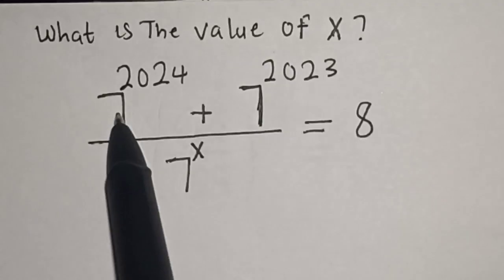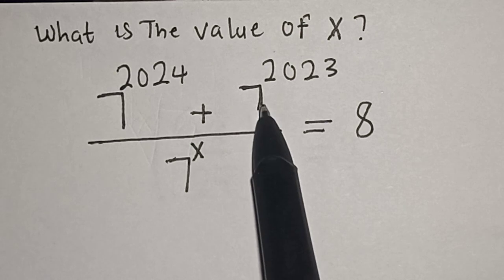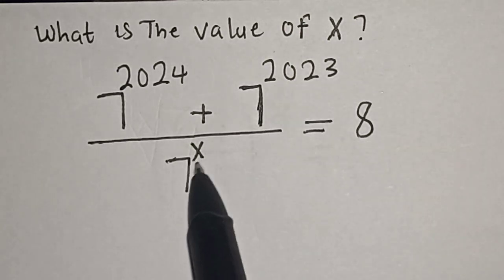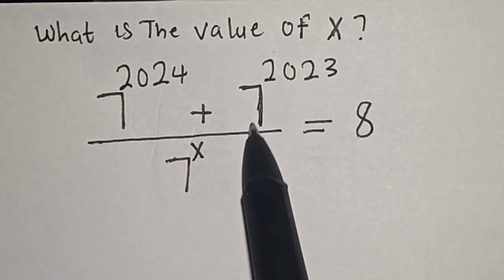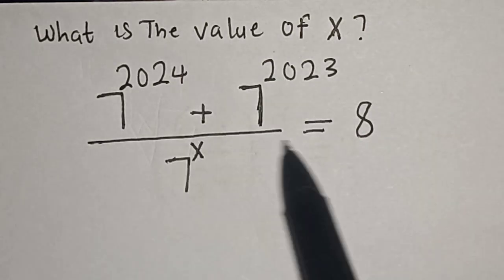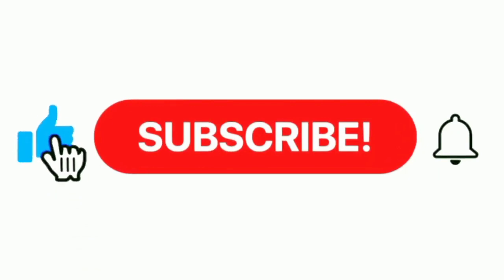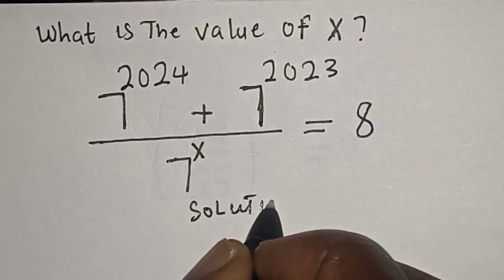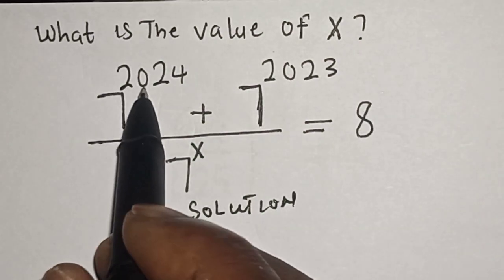What is the value of x? 7 raised to power 2024 plus 7 raised to power 2023, divided by 7 raised to power x, is equal to 8. Hello, welcome to my class. In this class we want to find the value of x from this equation. Like, share, comment and subscribe.